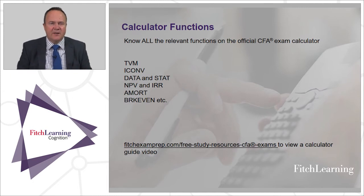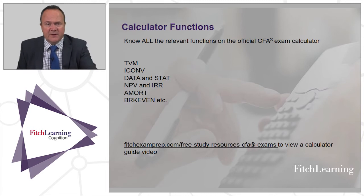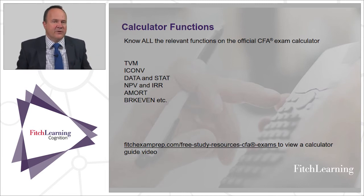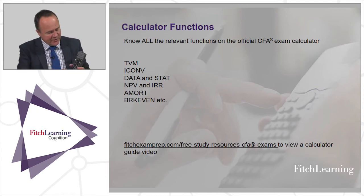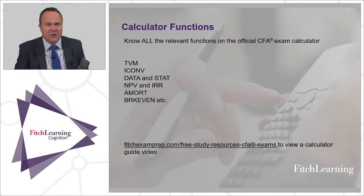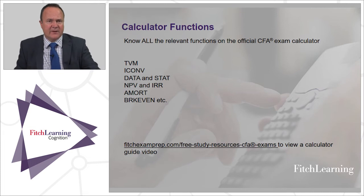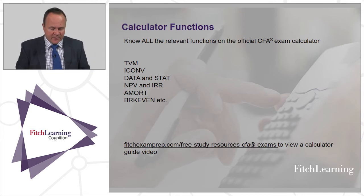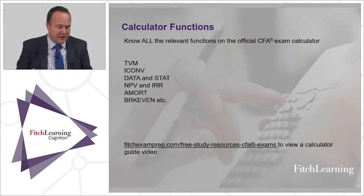Crucially, please make sure you remember how to clear the memory — otherwise, if you don't use a particular value in the next question, the last value you entered will still be there. On that third row, use the clear time value of money command, which is above the FV key on the far right-hand side. It's the yellow function, so access it by pressing the yellow second button — so second and FV will clear the memory.